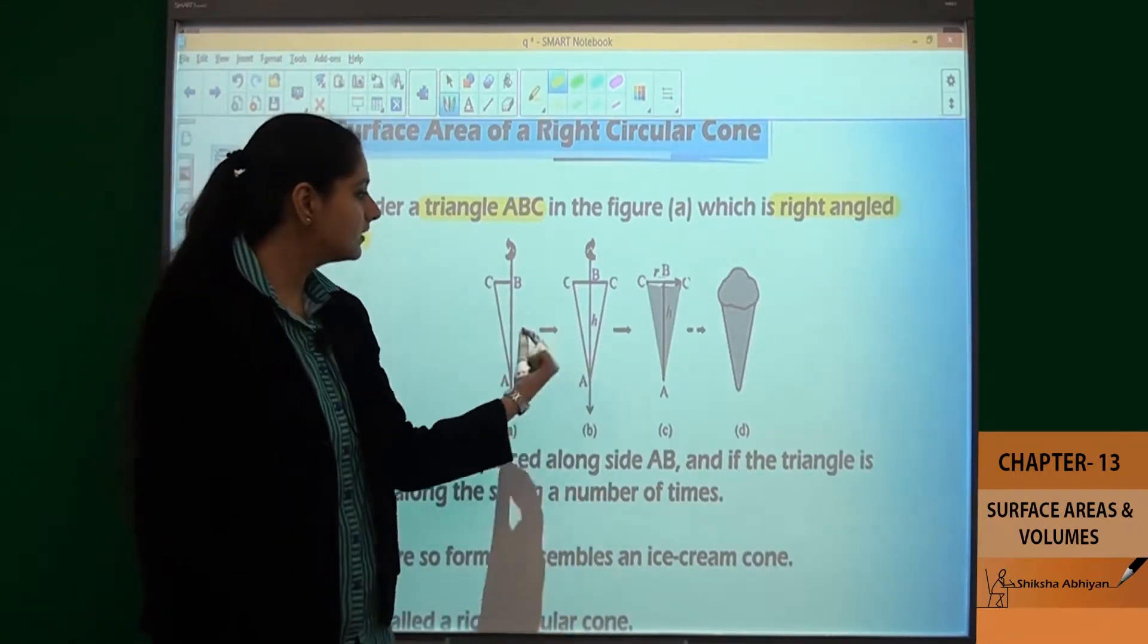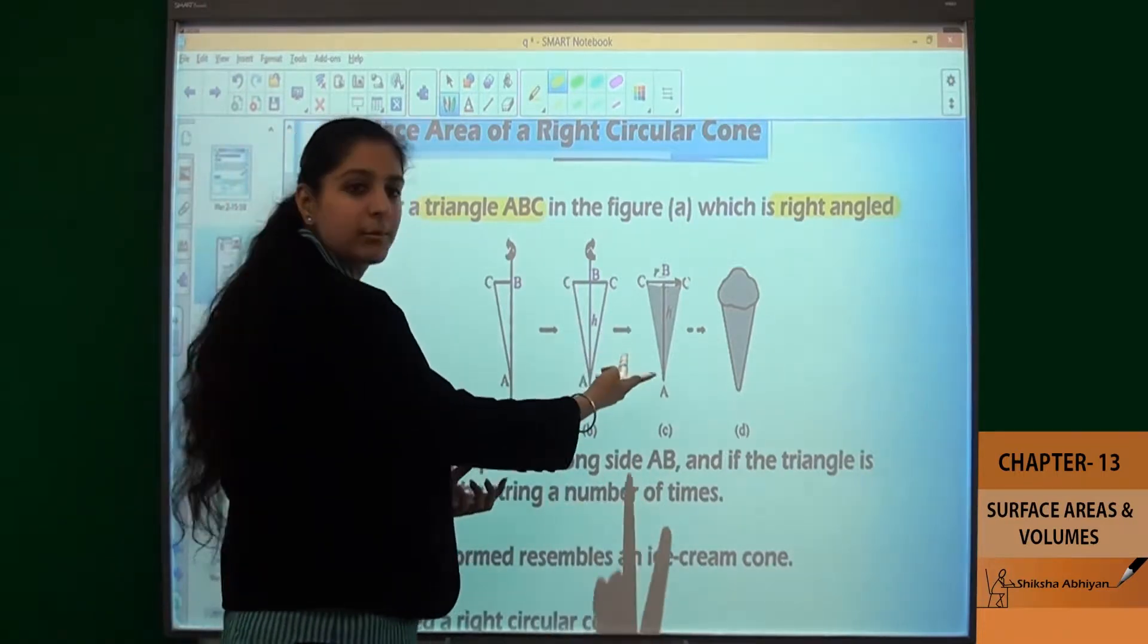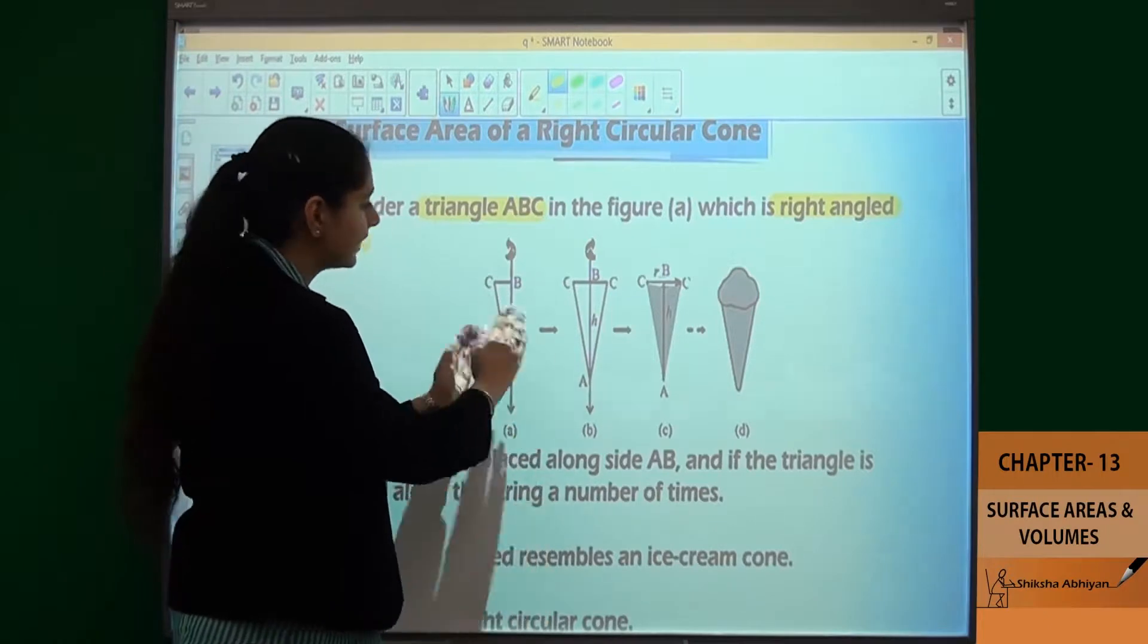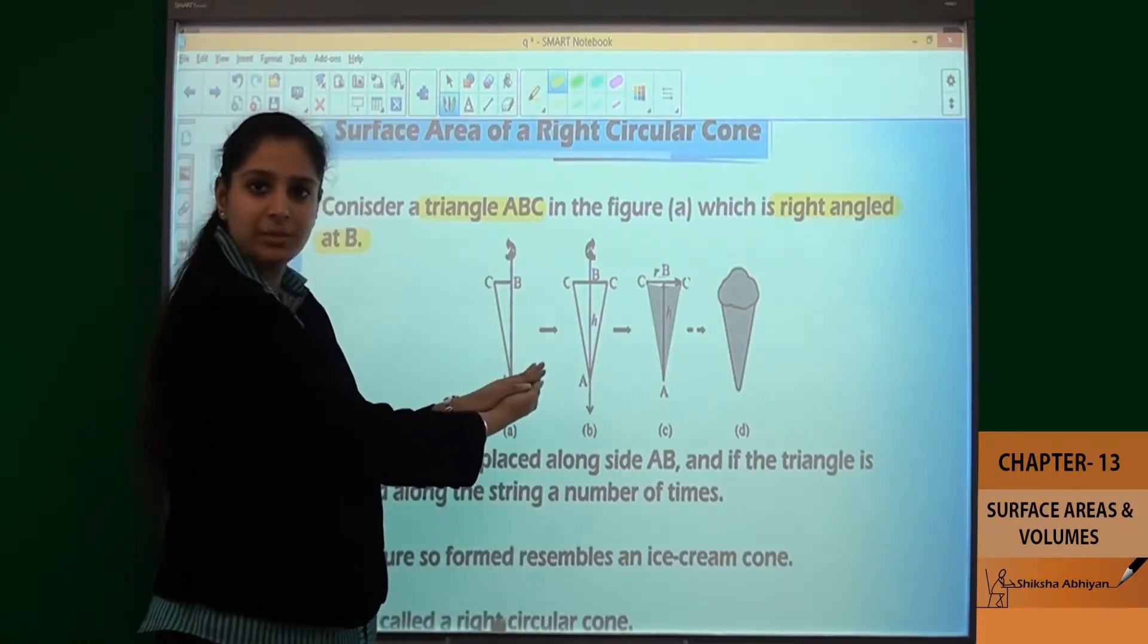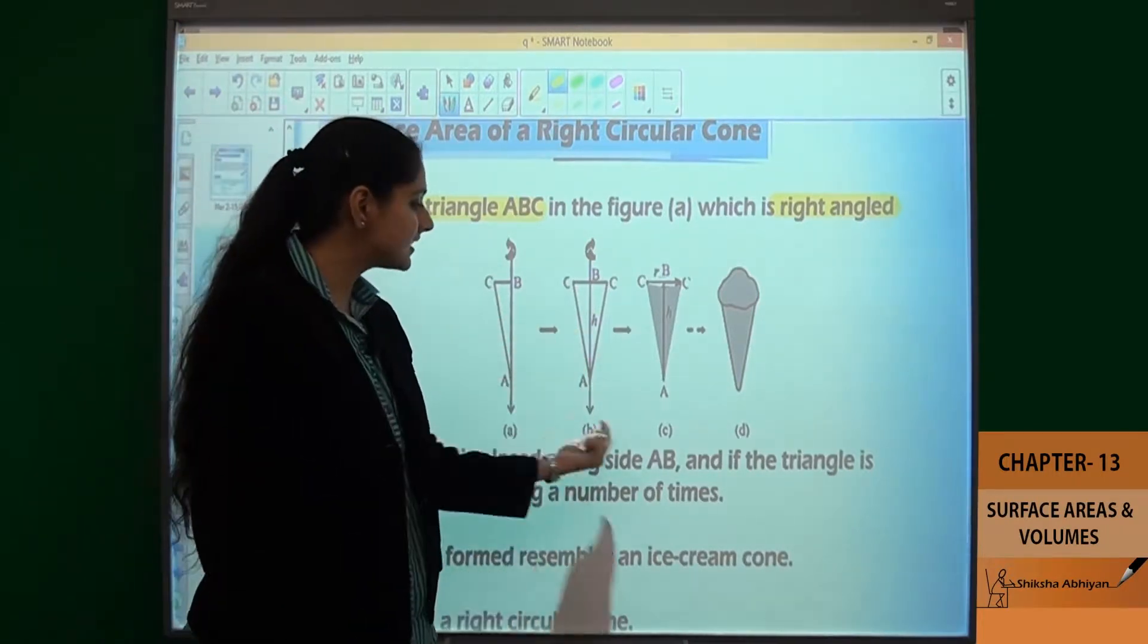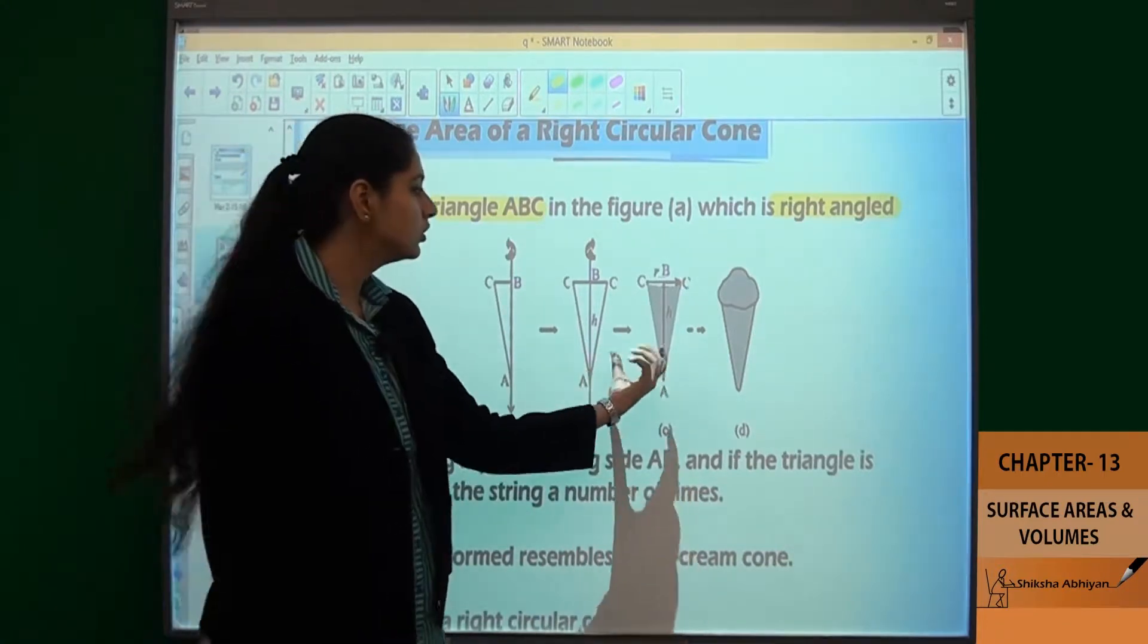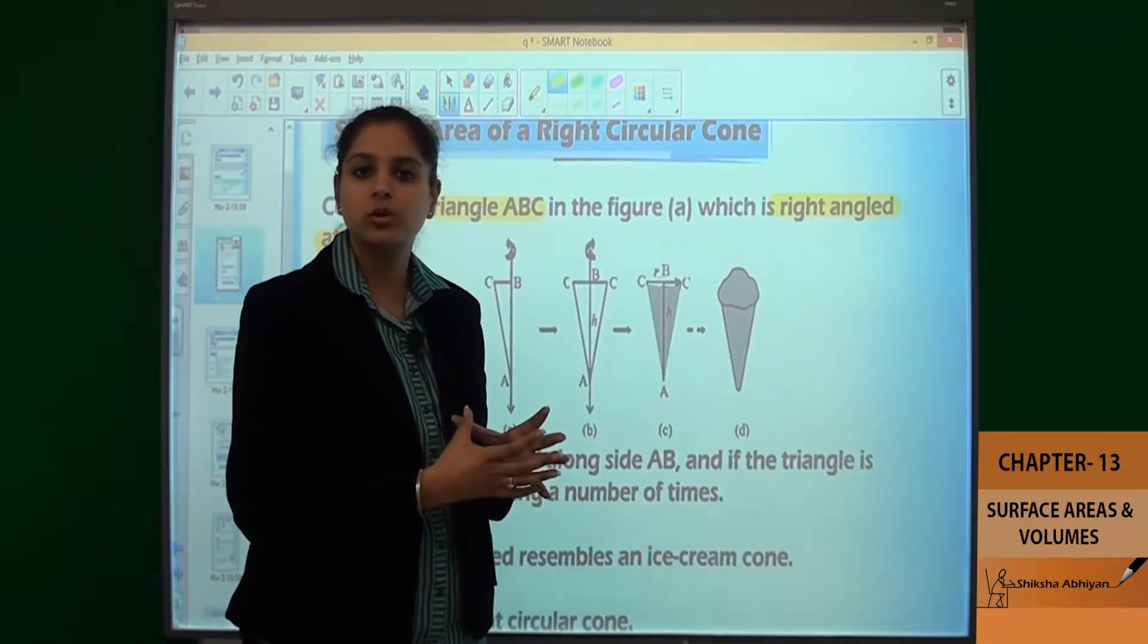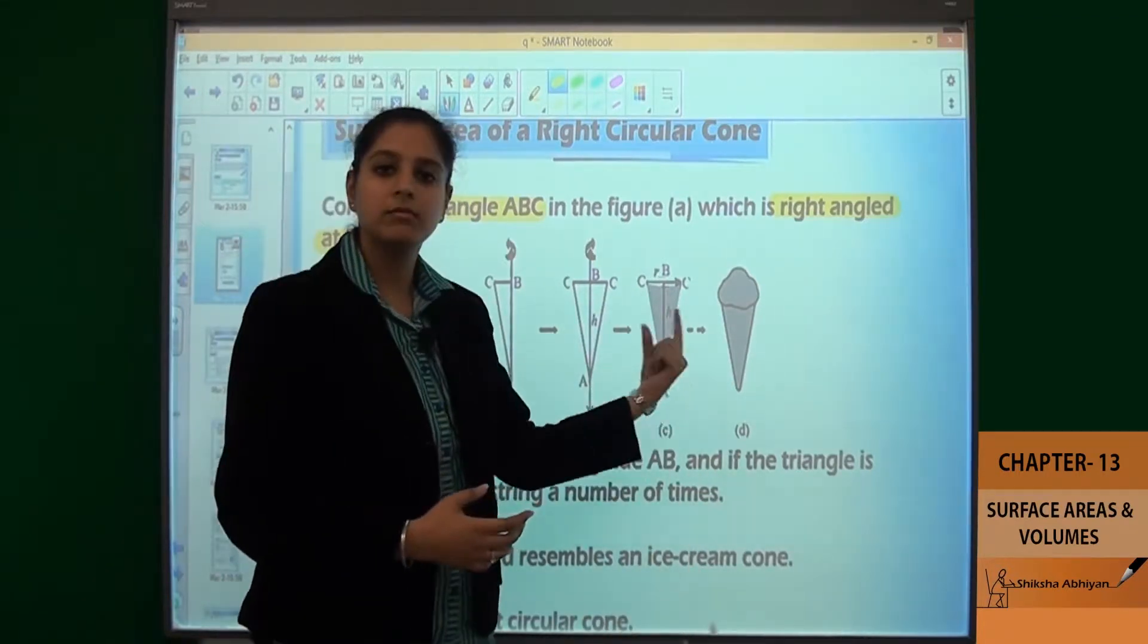Then a figure is formed. It is replicated on the other side as well. If we rotate it many times, a solid figure is formed like this, and it looks like an ice cream cone.